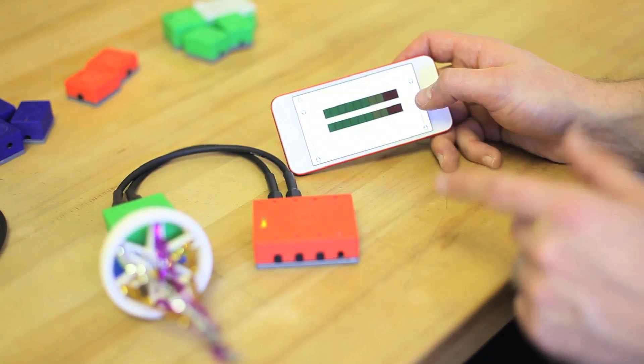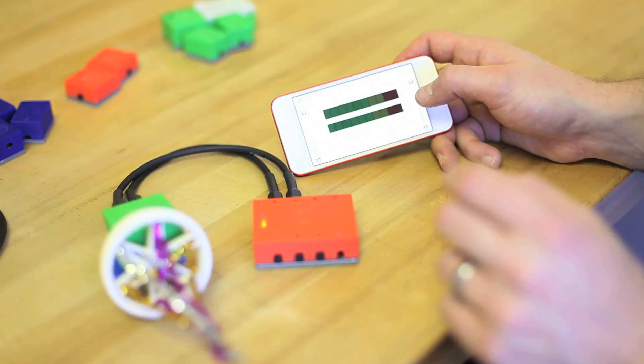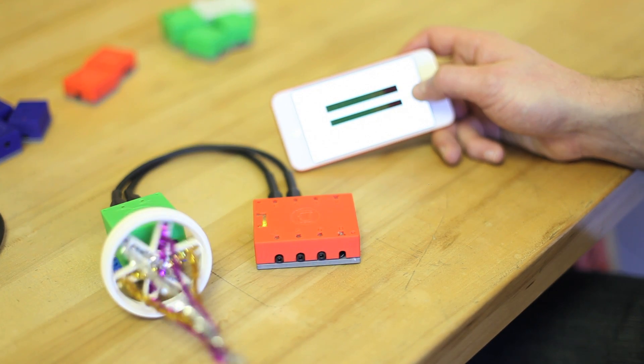If you want to control any green atoms or read any blue atoms from an iOS device then you just plug into the Bluetooth 4 brick and now you can control them with our app.